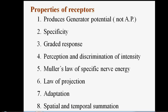Here we see the properties of receptors and try to enumerate them. The first important property is that receptors produce generator potential and not action potential. Second is specificity. Third is graded response. Fourth is perception and discrimination of intensity. Fifth is Muller's law of specific nerve energy. Sixth is law of projection. Seventh is adaptation. Eighth is spatial and temporal summation. These are the basic properties of receptors.